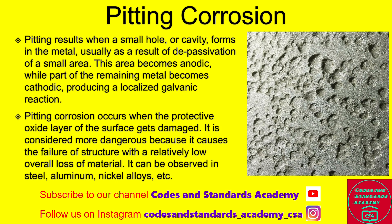Pitting corrosion results when a small hole or cavity forms in the metal, usually as a result of de-passivation of a small area. This area becomes anodic while the remaining metal becomes cathodic, producing a localized galvanic reaction. Pitting corrosion occurs when the protective oxide layer of the surface gets damaged, and it is considered more dangerous because it causes structural failure with a relatively low overall loss of material.